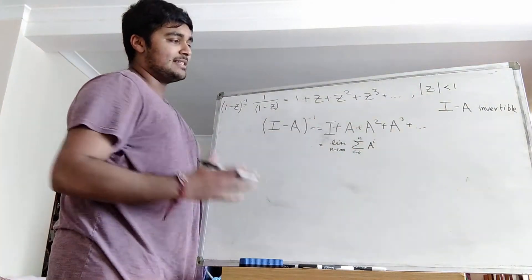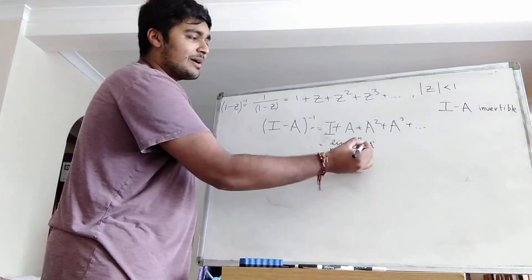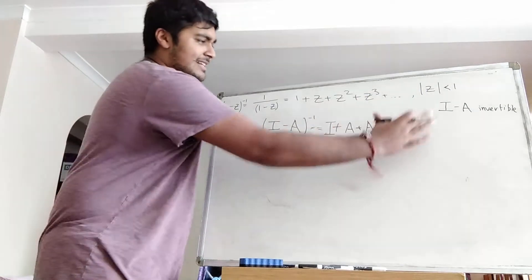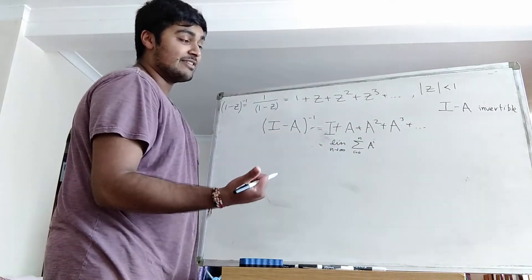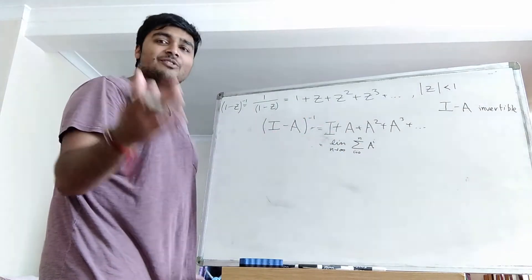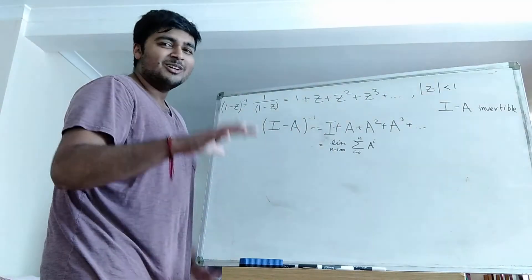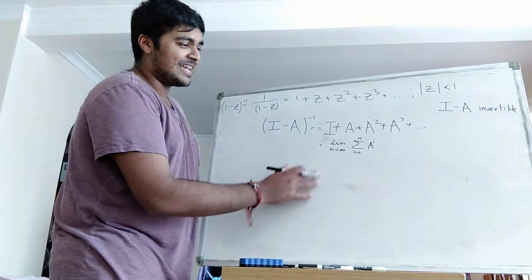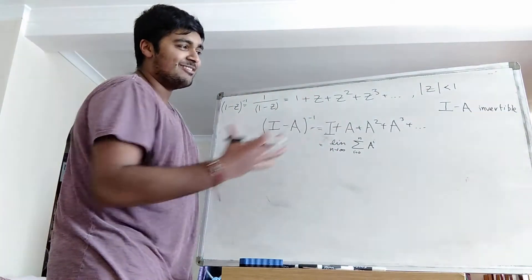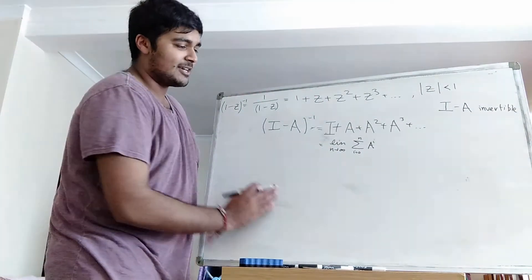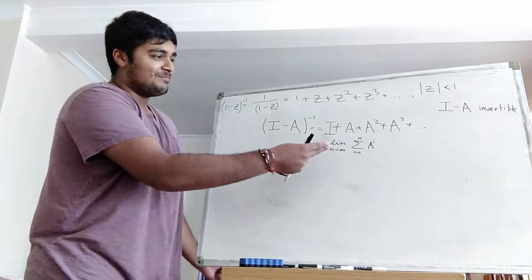Because that is A to the 0, which is I, plus A to the 1, which is A, plus A squared, and so on all the way up to n, and we're taking n to infinity — that's where we get this infinite series. Now technically we have to have some metric for this limit to exist; it has to converge to something, and the notion of convergence means there's some sort of metric on the set of matrices. But for now I'm not going to go into too much detail there. We can essentially apply convergence properties of real numbers to matrices, because generally it will hold regardless of what metric you use on the set of matrices.